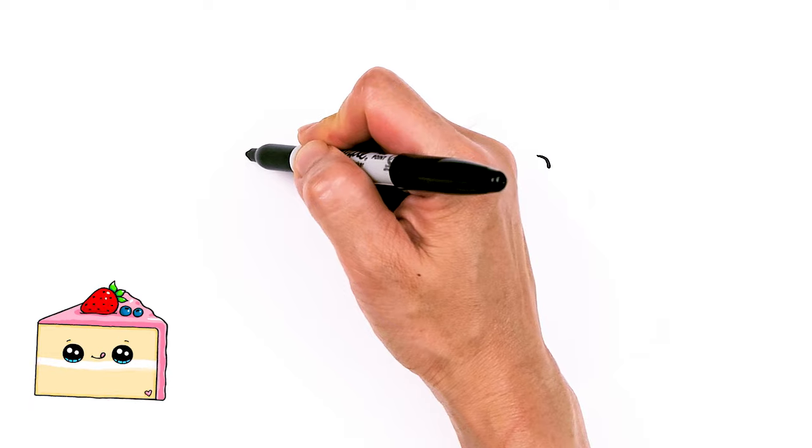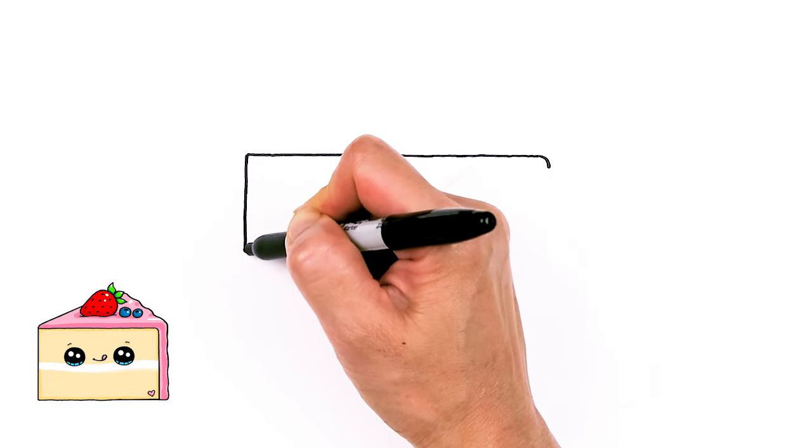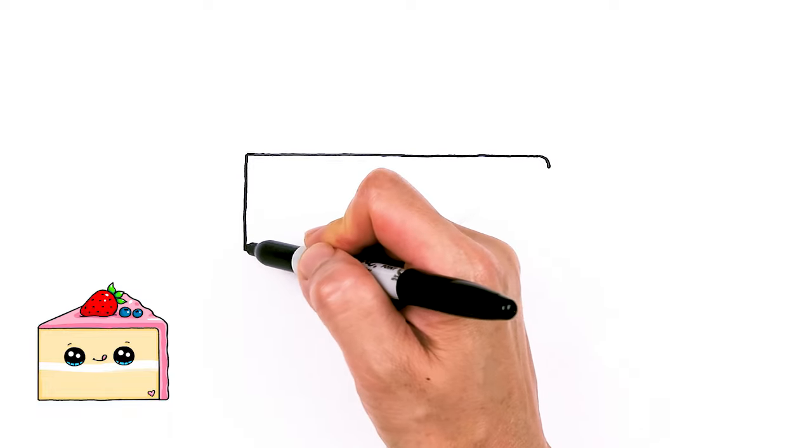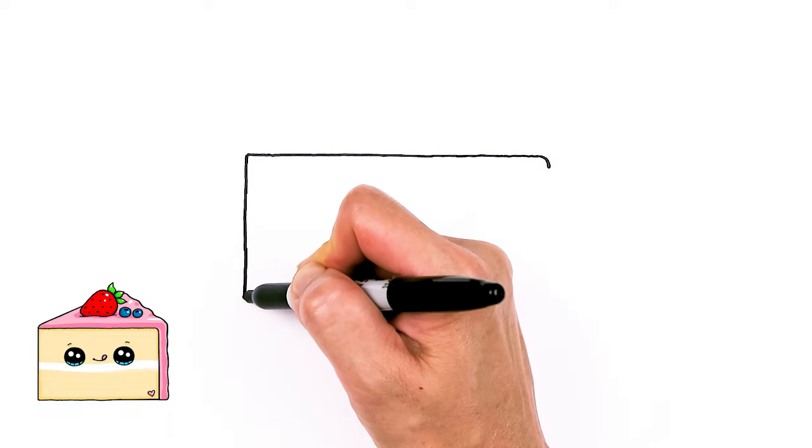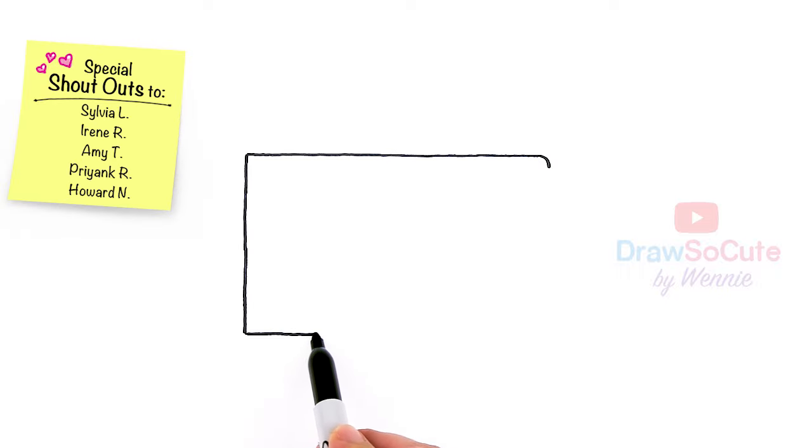And this side, I'm just going to make it a little bit straighter. So this is just the edge of our cake. Just take a look at my camera, make sure I'm going straight as possible. And one more, say about that tall. And then I'm going to go ahead and just go right across for the bottom of our slice.